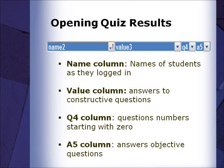The Name column will have the names of your students as they logged into Blackboard Collaborate. The Value column has the answers to any constructive questions. The Q4 column contains the question numbers starting with zero. The A5 column contains the answers to objective questions within the quiz. It should be noted that these columns may be sorted or filtered, just like any Excel spreadsheet.